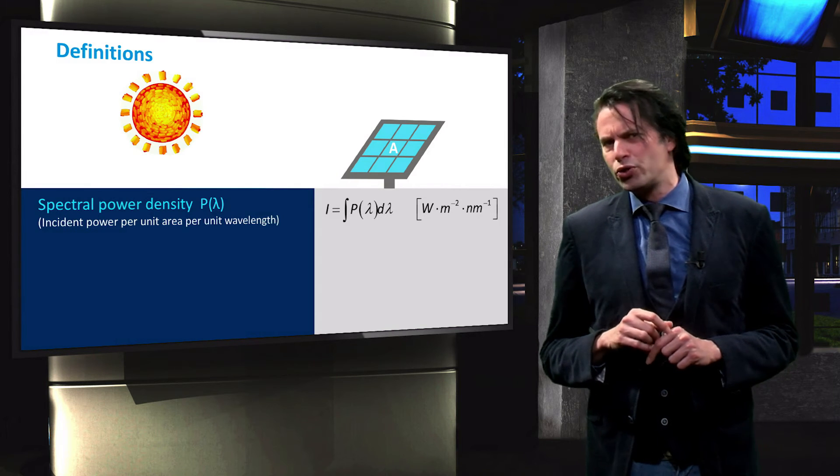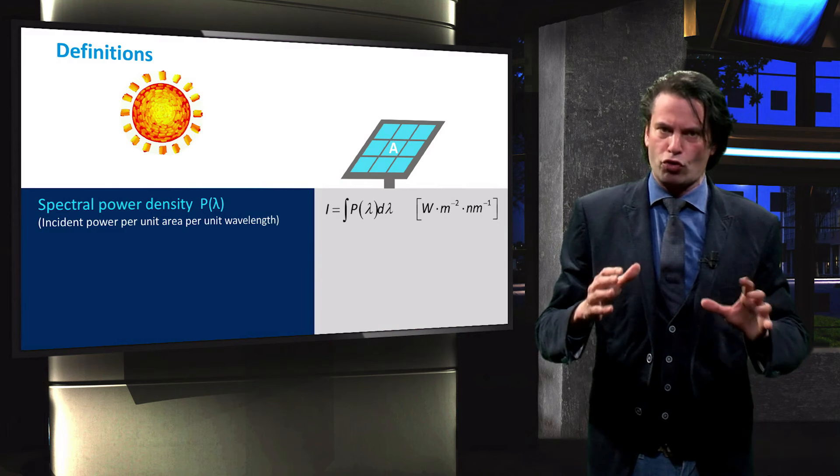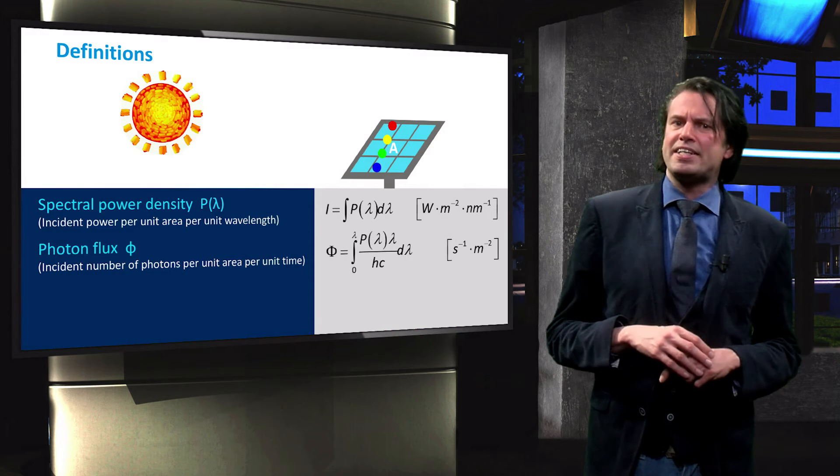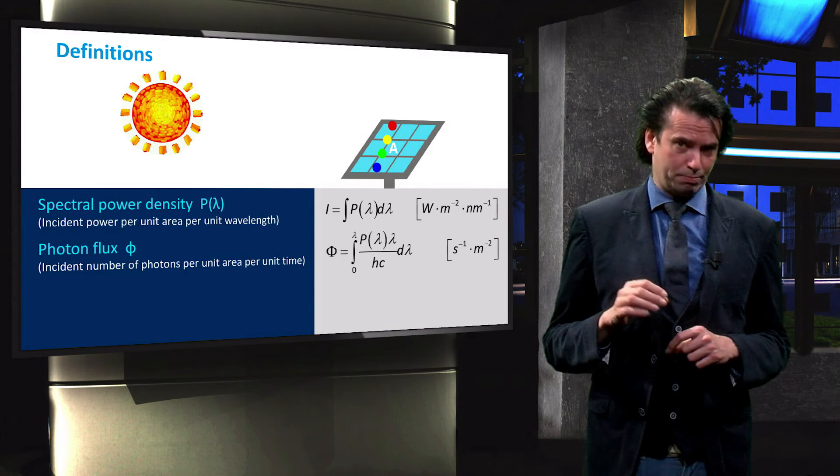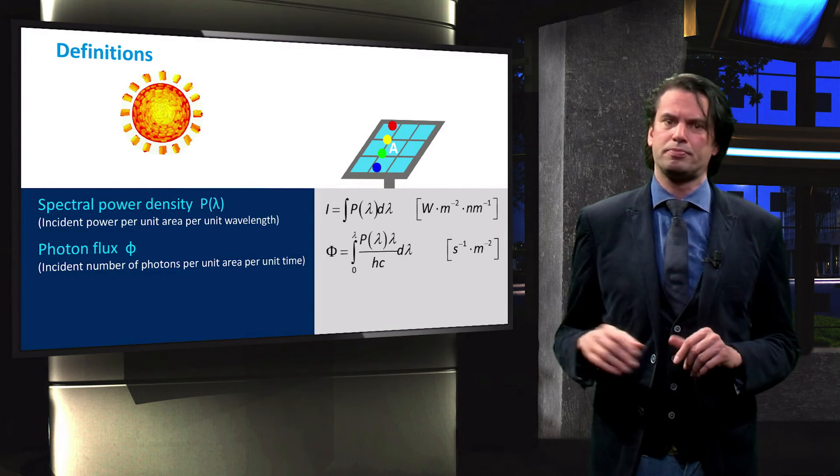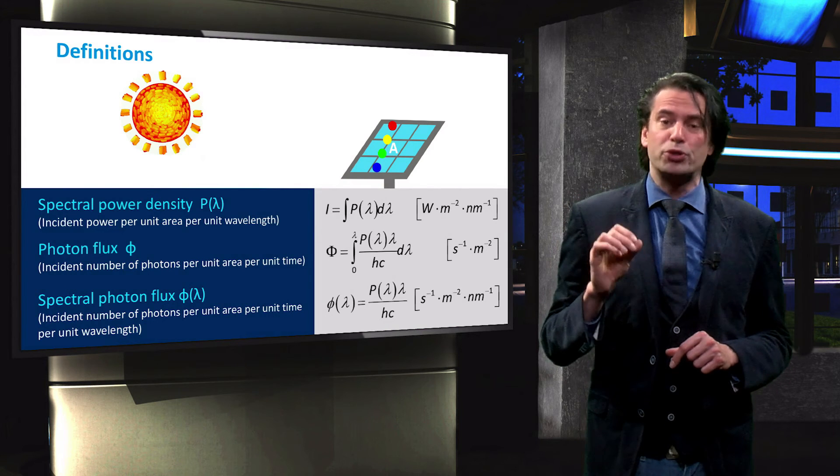Light incident on a solar module surface can also be expressed as a flux of photons, rather than a flux of energy. The photon flux is defined as the incident number of photons per unit area per unit time. It is measured in photons per second per square meter. The spectral photon flux gives the photon flux per unit wavelength.